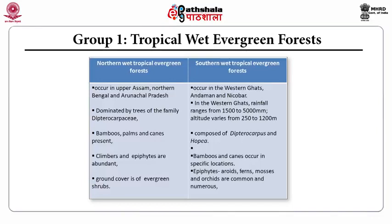Continuing with Group 1 tropical wet evergreen forests, we have the northern wet tropical evergreen forest and the southern wet tropical evergreen forest. The northern wet tropical evergreen forests are composed of trees of the family Dipterocarpaceae. There are bamboos, palms, and canes. Climbers are present and ground cover is of evergreen shrubs.